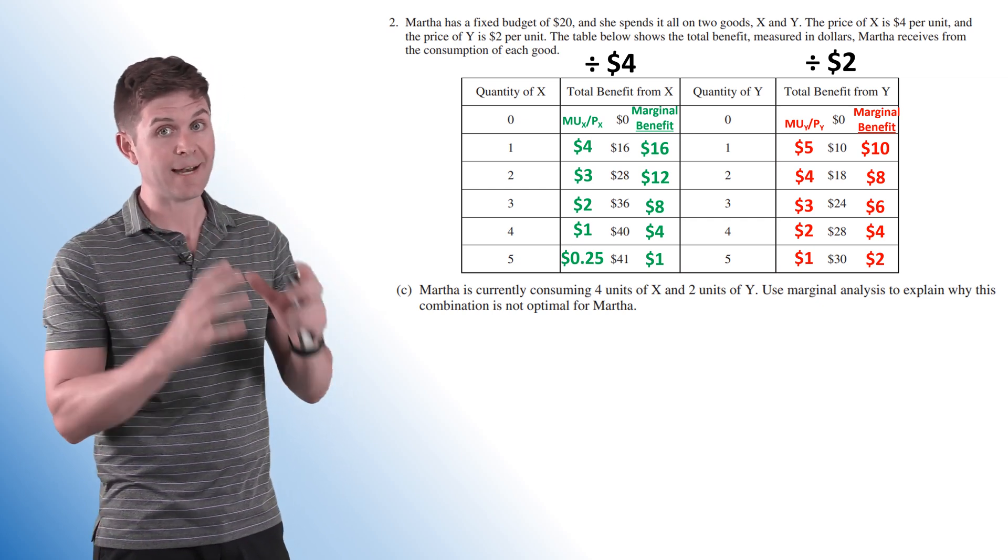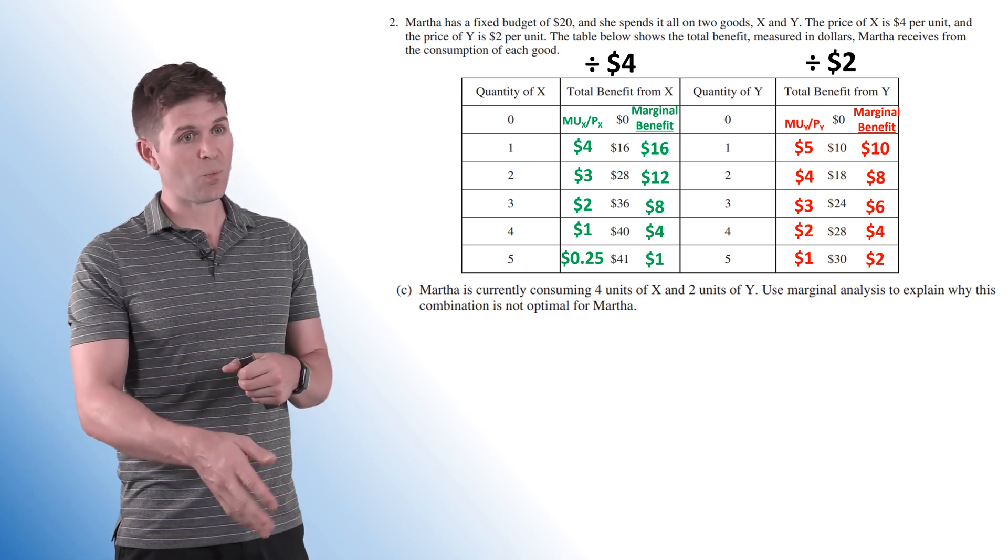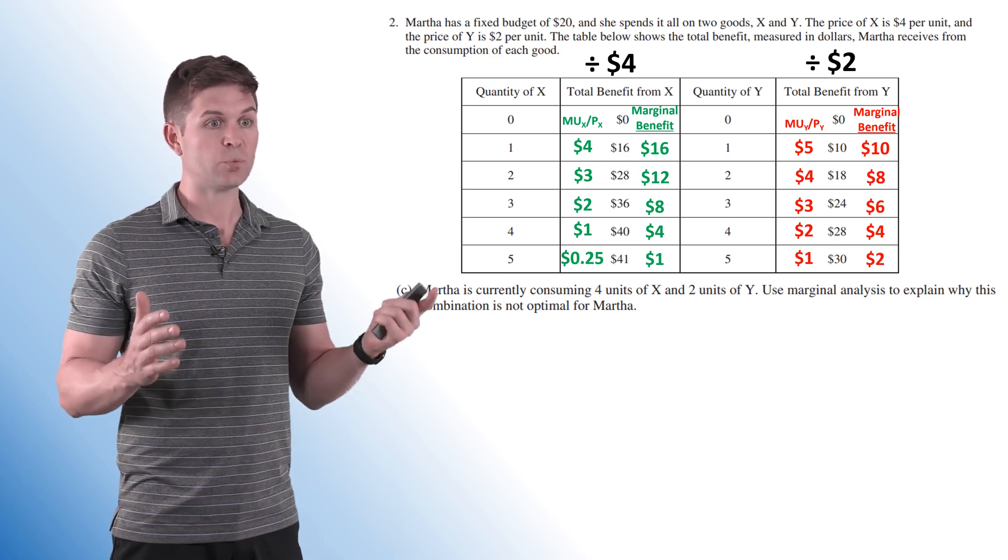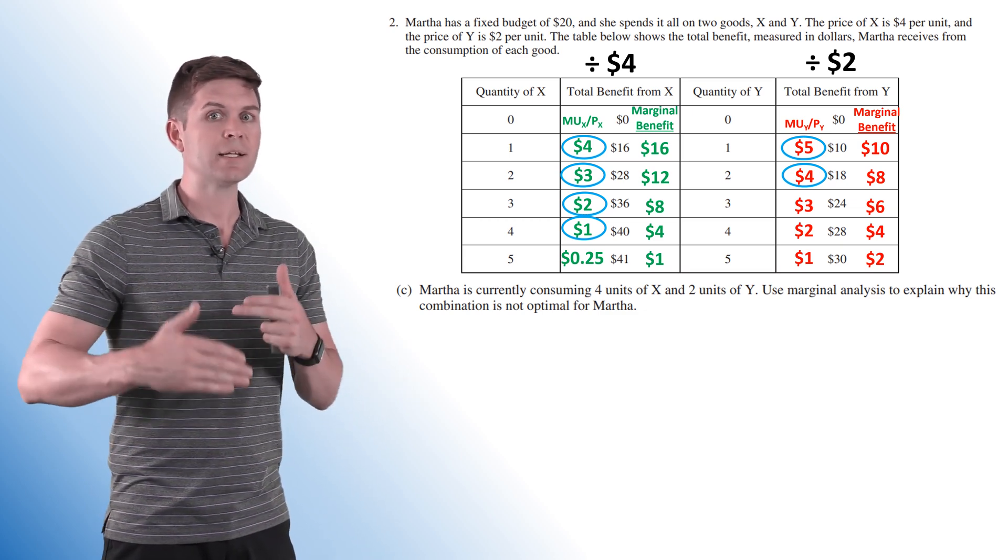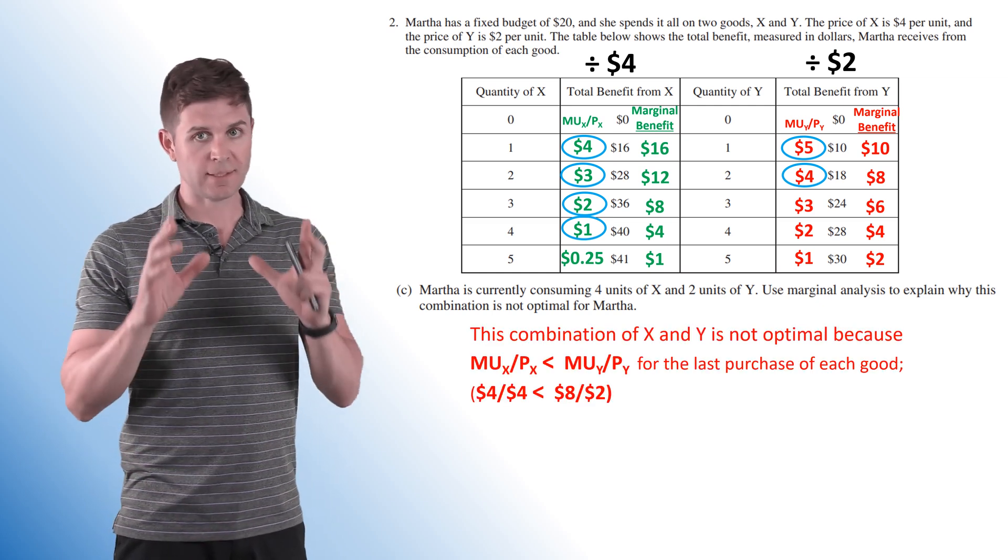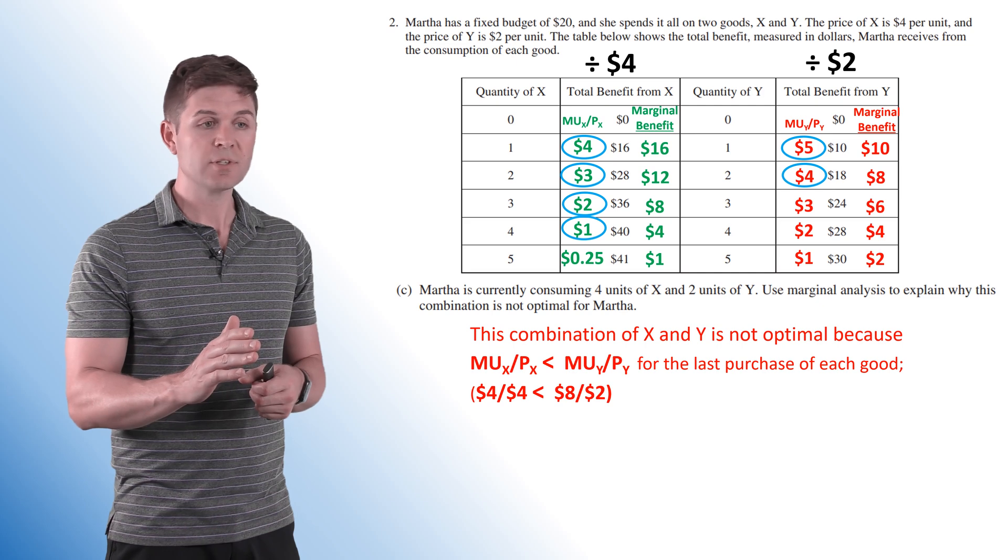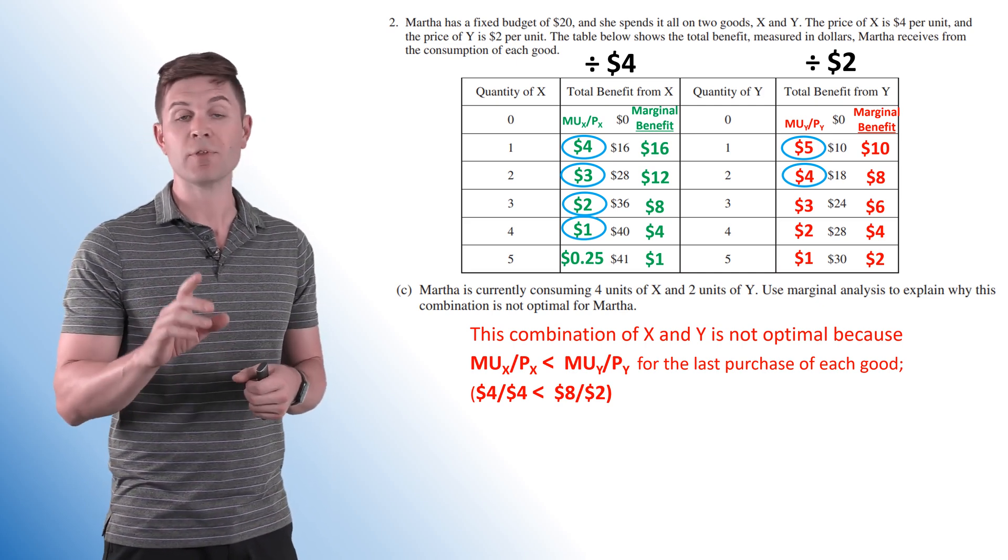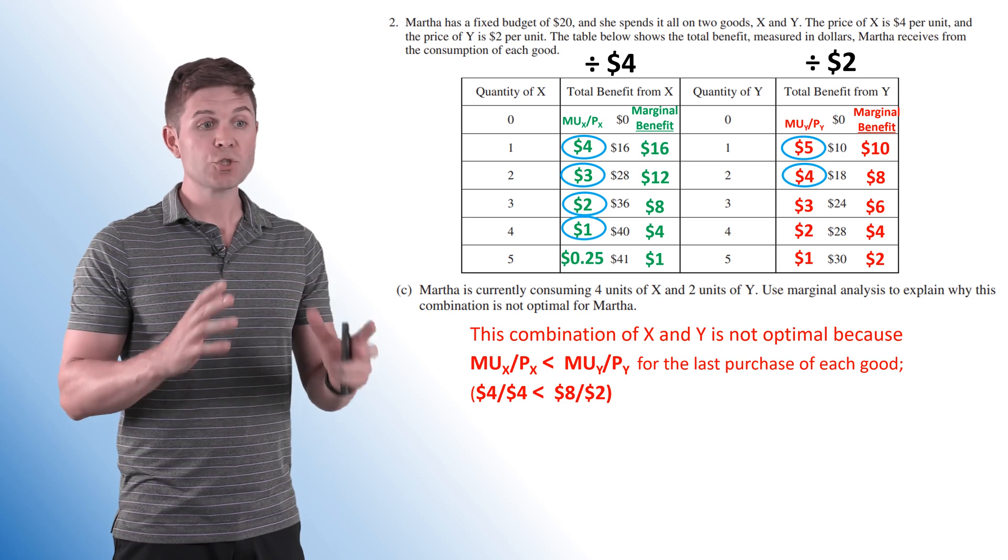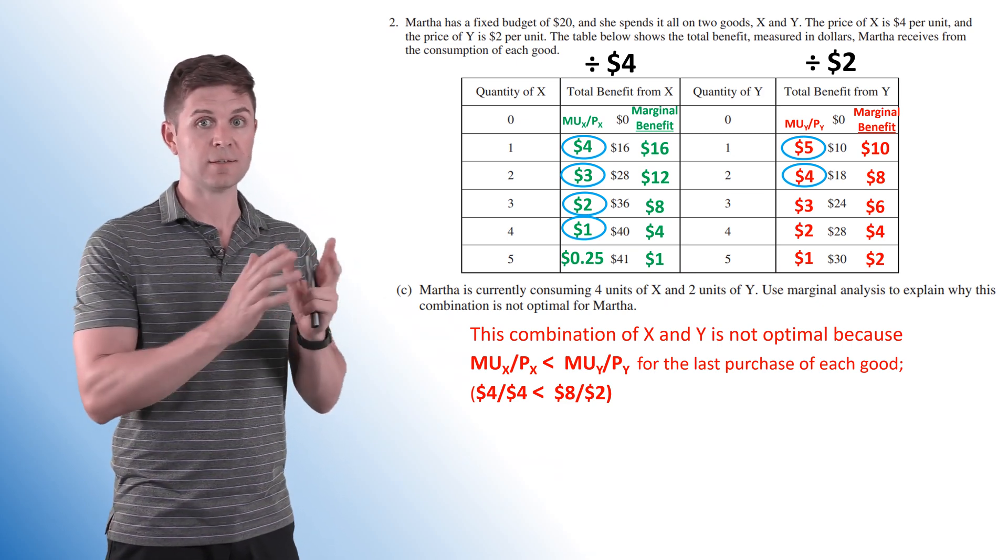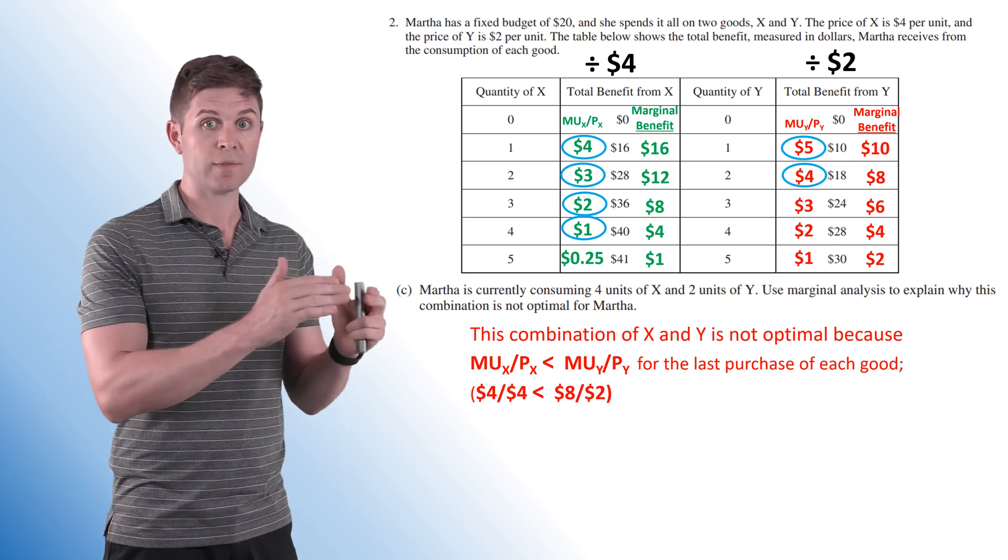Now let's jump back to C and explain why this is not the optimal combination because we know what the optimal combination is. Four units of good X, four units of good Y. Three units of good X. So let's see why this one is not. In this case, we are buying four units of X and two units of Y. If this is the case, it's not hard to figure out why it's not, but explaining it's a little bit more in depth. So what you need, and this is the key part of this question, the combination of X and Y is not optimal because the marginal utility per dollar spent of X is less than the marginal utility per dollar spent of Y for the last purchase of each good. Or if you want to throw the actual calculations in there, 4 divided by 4 is less than 8 divided by 2. Make sure you have that one way or the other. You have to state that the marginal utility per dollar spent of the last unit of each good does not equal each other. And having one less than the other is even better.